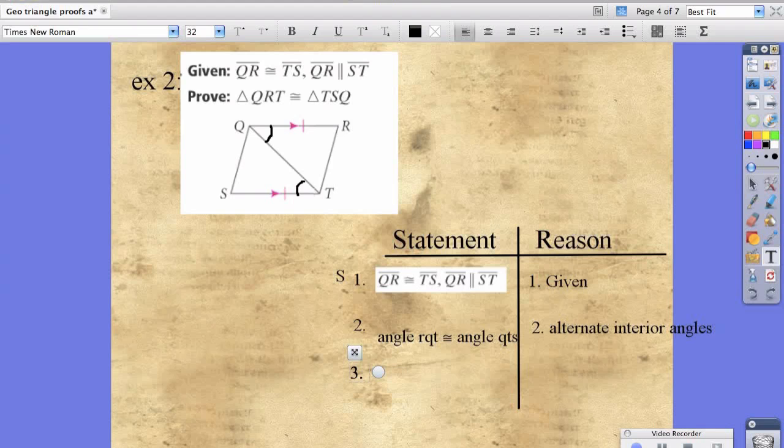Step 3 is, we also have QT because the two triangles are sharing sides. QT is congruent to QT, line segment QT, because those two angles are reflexive property. Any time the two triangles are touching, it should be an automatic that you have the reflexive property. We've proved another angle here and the side here.